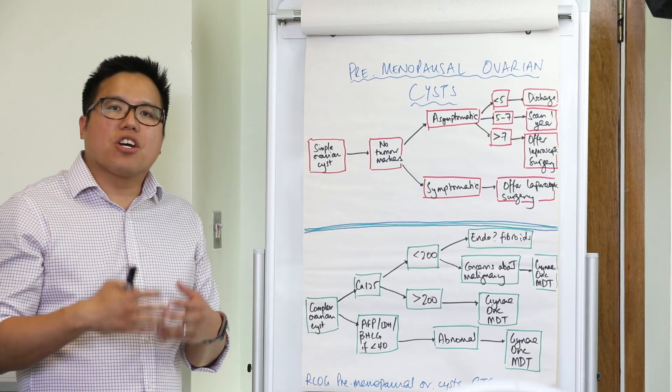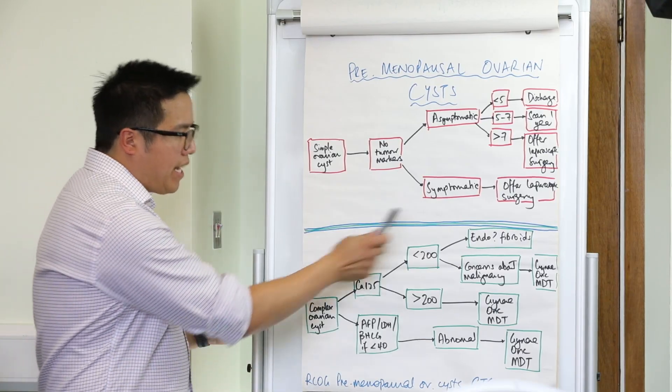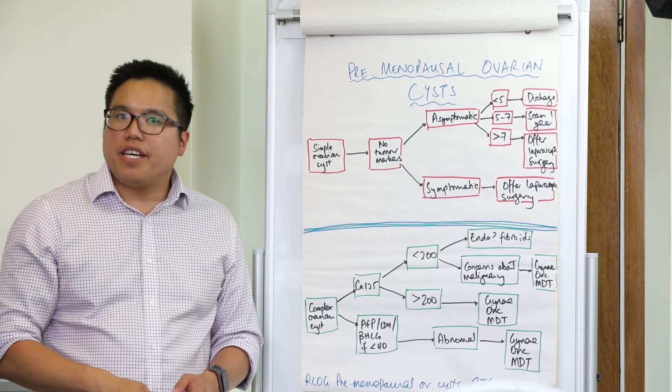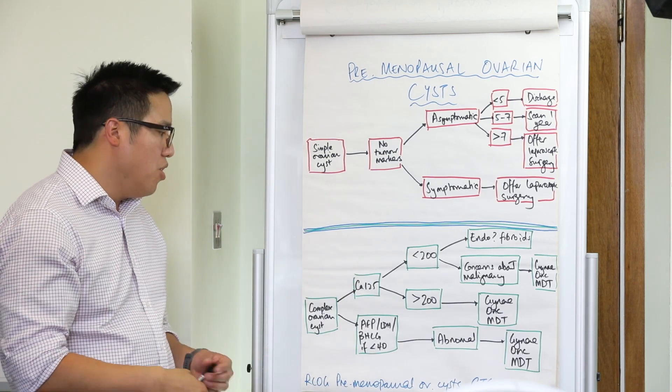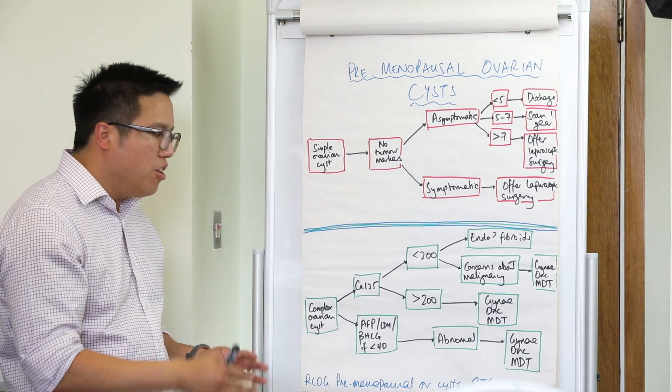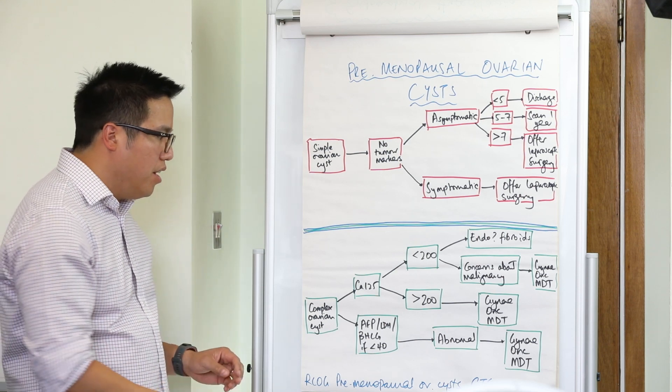What happens if the scan shows a complex ovarian cyst? Well take you to this flowchart here at the bottom. So if there's a complex ovarian cyst with septations or if there are solid components on the ultrasound scan, you're going to do four tumour markers.